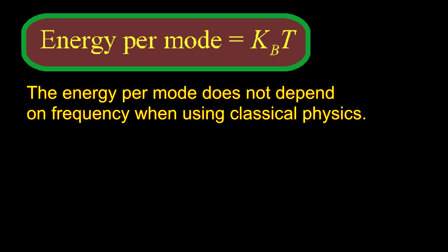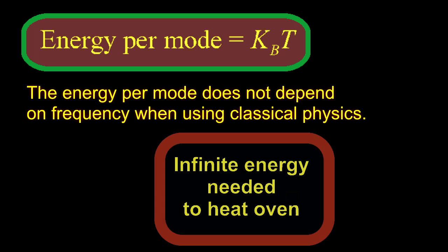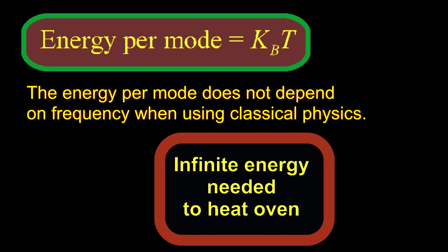First, he noticed that the classical energy per mode did not depend on the frequency. It's simply kt. Since the number of modes increases with frequency, you get infinite energies in the cavity. What Max Planck needed was a way to reduce the energy per mode as the frequency increased.